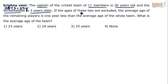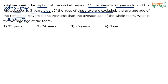Now, the ages of these two are excluded — 26 years and 29 years are excluded from the group. The average age of the remaining players: out of 11 members, excluding 2 leaves 9 remaining — 11 minus 2 equals 9. The average age of the remaining 9 players is one year less than the average age of the whole team. What is the average age of the team?